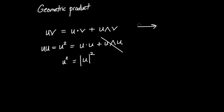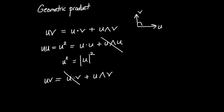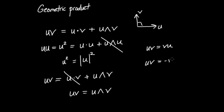Another case: if U and V are perpendicular, the dot product part disappears and the geometric product equals just the wedge product. I should also point out that in general the geometric product is neither commutative nor anti-commutative. As an exercise: if U and V are in the same direction, then UV equals VU (commutes). If U and V are orthogonal, then UV equals minus VU (anti-commutes). But in general the vectors don't have to be parallel or orthogonal.